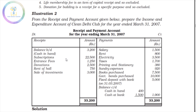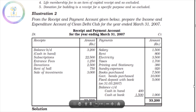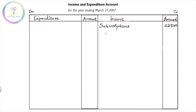The next item is entrance fees. Entrance fees is 5,350. Entrance fees involves an adjustment and is shown on the balance sheet under liabilities. The income and expenditure account shows it on the income side — that is the entrance fees.